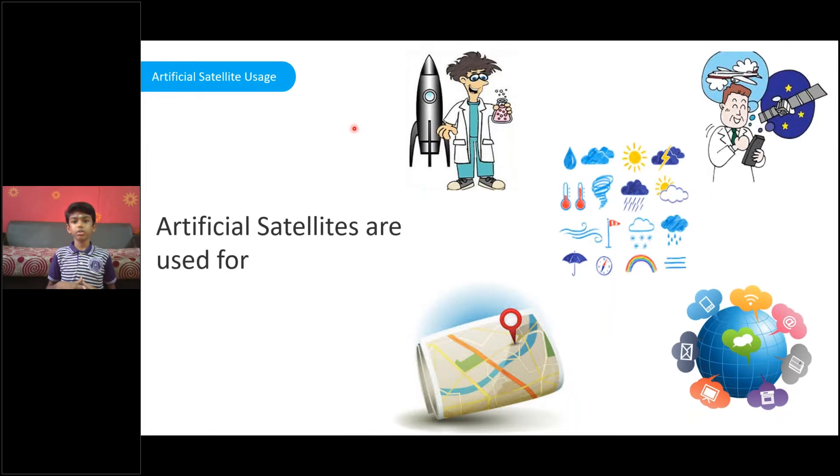Artificial satellites are used for many purposes, including scientific research, weather observation, GPS navigation, communication and many more.